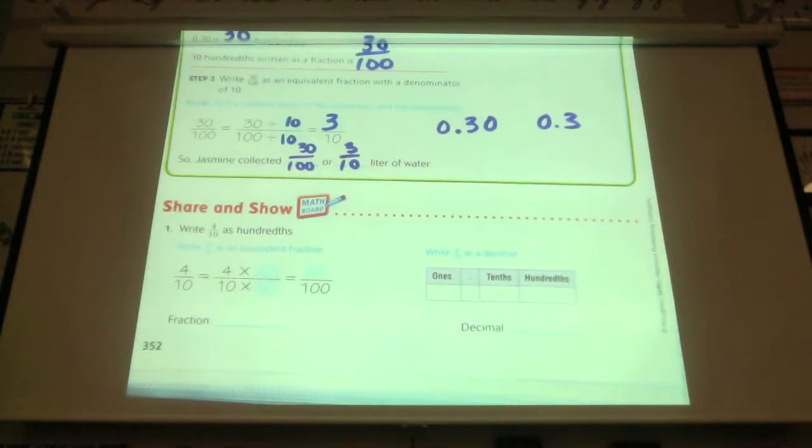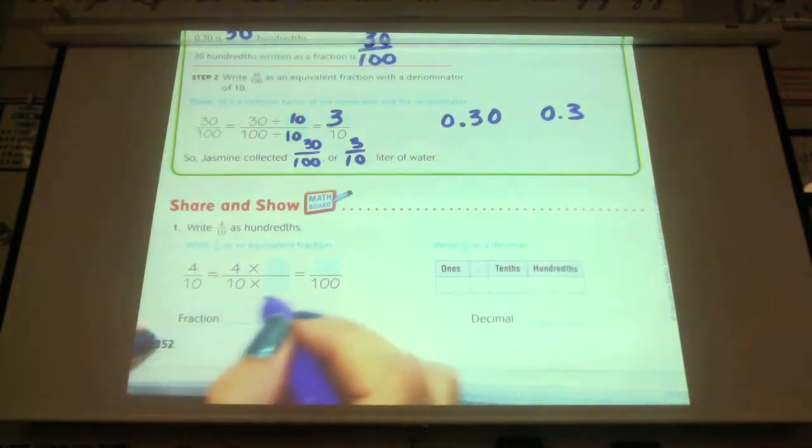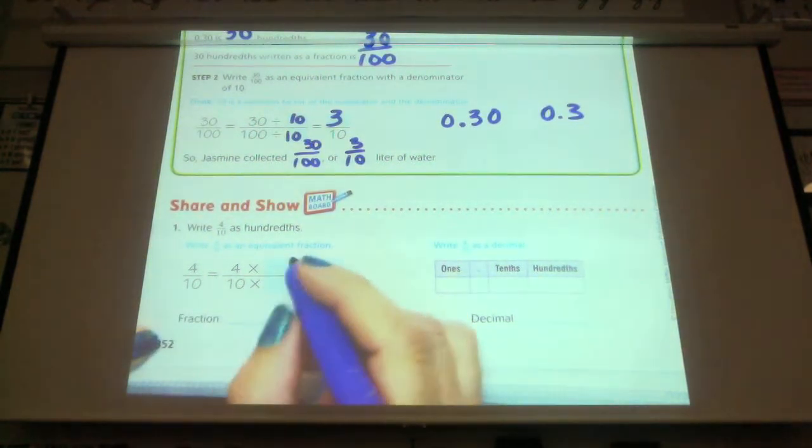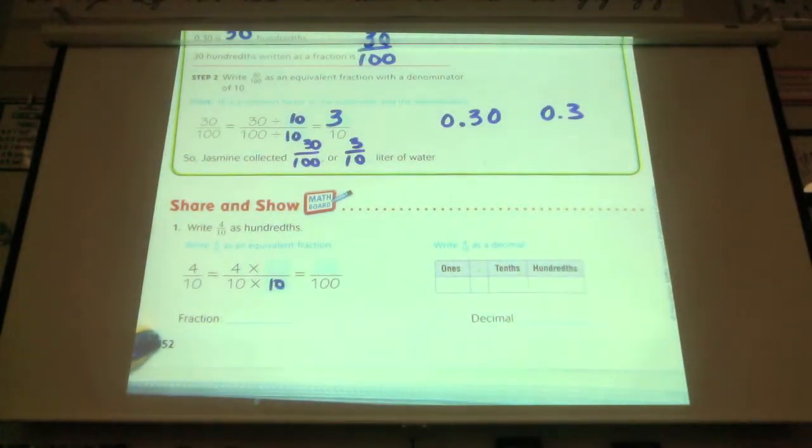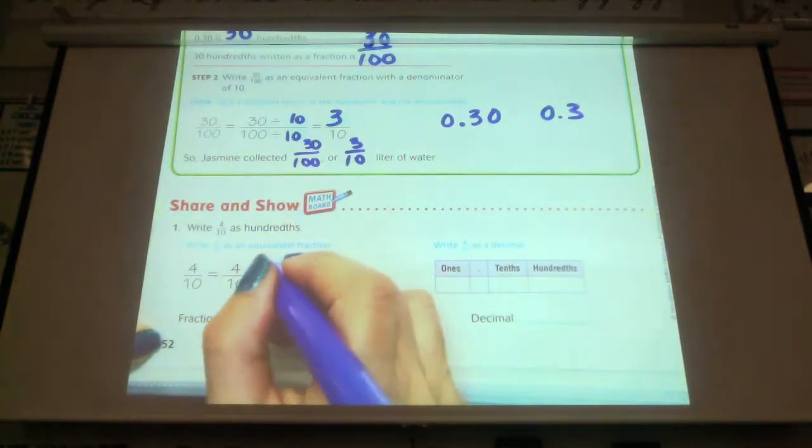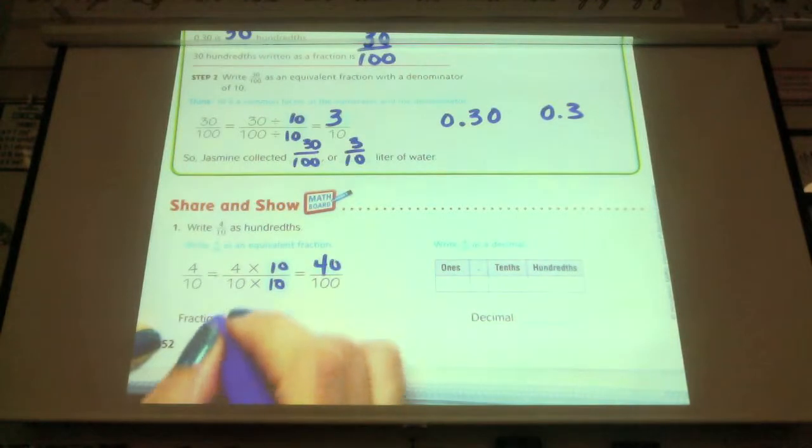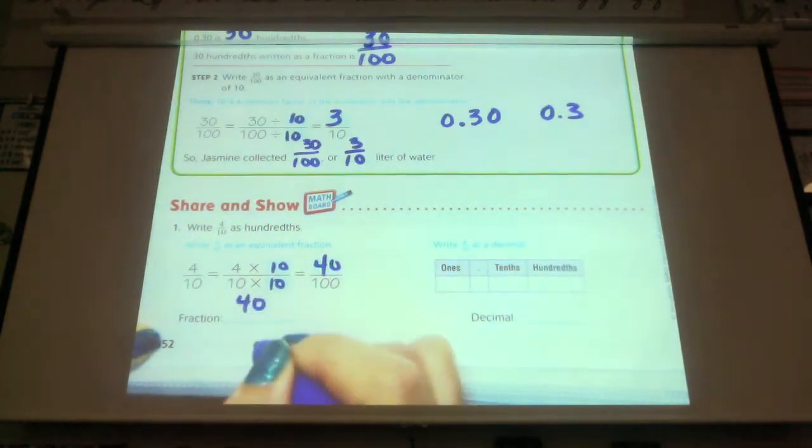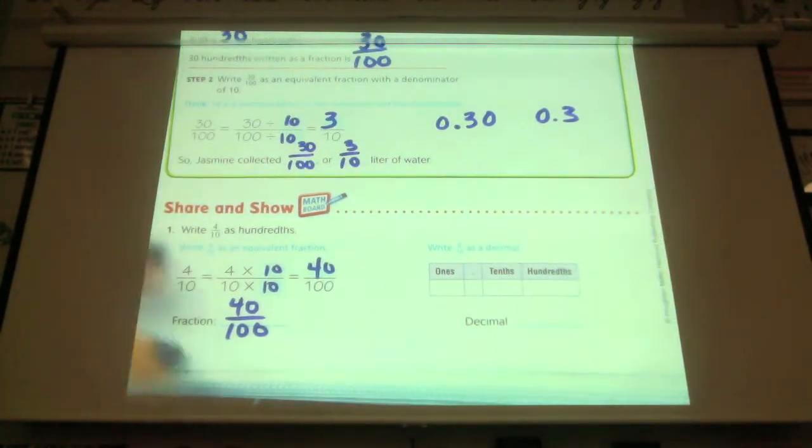"Write four tenths as an equivalent fraction. Write four tenths as hundreds. Now, if we're going from tenths to hundreds, we have to multiply by ten. If I multiply the denominator, I multiply the numerator by ten. Four times ten is forty. So my new fraction is forty hundredths. Don't write just yet. We're going to do the next one."